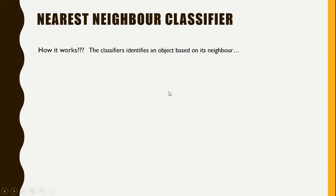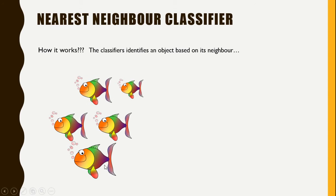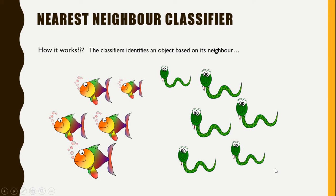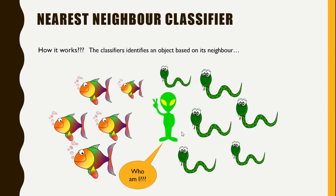For example, consider that we have a group of fish over here and we have a group of snakes over here, and in the middle of these two we have some unknown object. All I know is that this object has to be either a fish or a snake, but I don't know which it is as it is unlabeled. Based on the nearest neighbor classifier, all I have to do is classify this unknown object into either of these two groups.